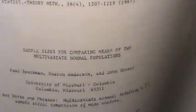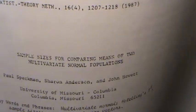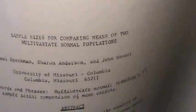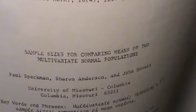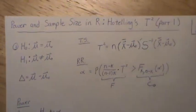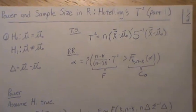Now, I'm going to flash an article here, and this is an article that's sample size for comparing means of two multivariate populations, that's by Speckman, Anderson, and Hewitt in 1987. Okay, I'm going to follow this paper in describing this video.